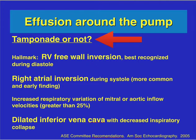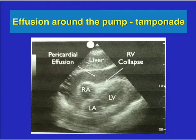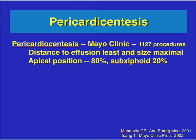There are two approaches for pericardiocentesis. One is the subcostal approach, which is what most teaching demonstrates, but as you can see in this image, going subcostal means passing through a large portion of the liver before reaching the fluid pocket. A Mayo Clinic study from 2001-2002 showed that the distance to the effusion is least and maximal 80% of the time in the apical position compared to the sub-xiphoid approach. For acute drainage when the patient is in shock or hypotensive, the apical position with a small catheter may be optimal.